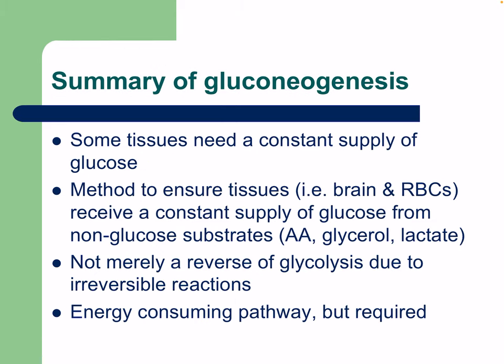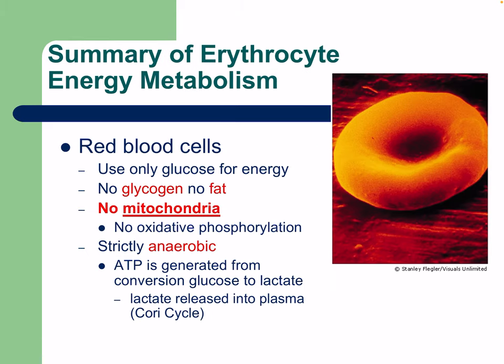Summary of gluconeogenesis: some tissues like the brain need a constant supply of glucose, and the body will do whatever it takes to get glucose to the brain. Gluconeogenesis ensures tissues like the brain and red blood cells receive a constant supply of glucose from non-glucose substrates like amino acids, glycerol, and lactate. It is not merely a reverse of glycolysis due to irreversible reactions, and is energy consuming, but if dietary intake is sufficient it doesn't need to happen.